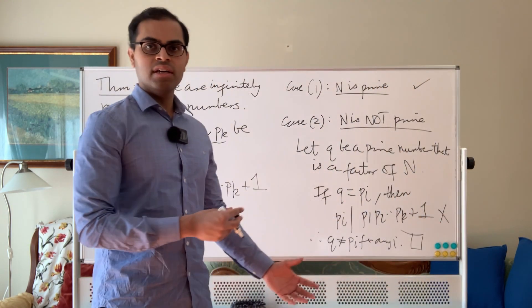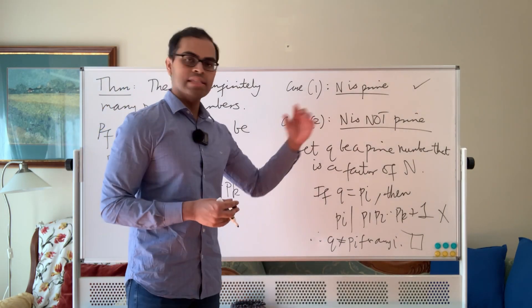So no matter what list that you give Euclid, Euclid finds a prime that's not on the list. That's the argument.